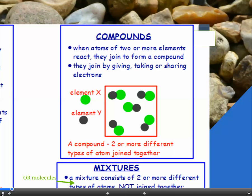Compounds. Now, when atoms of two or more different elements react, they join to form a compound. And they join in the chemical reaction by giving, taking or sharing electrons. So if you look at the diagram, we've got element X and element Y. They're joined, so that makes them a compound.